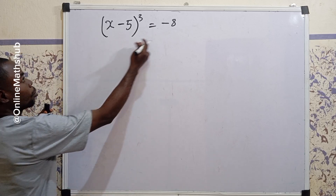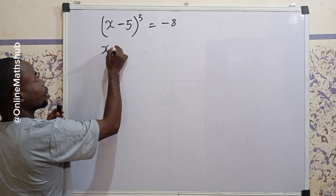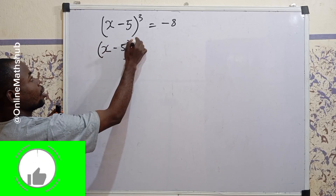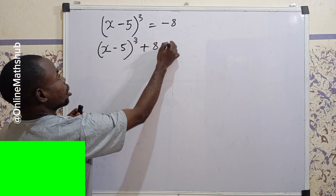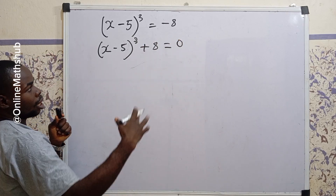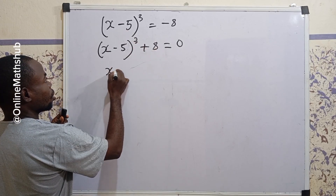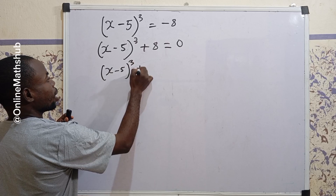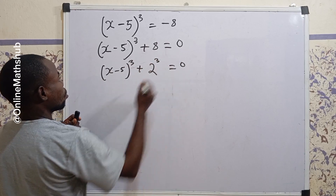What I'm going to do is move this minus 8 to the left, so I'll have (x minus 5) cubed plus 8 equals 0, which is the same as adding 8 to both sides. The next thing is to rewrite 8 as 2 to the power 3, so this is still equal to 0.